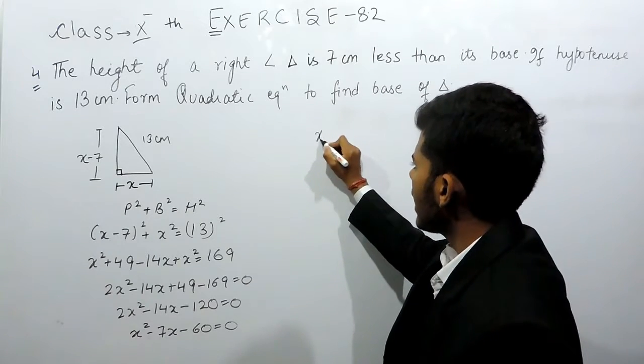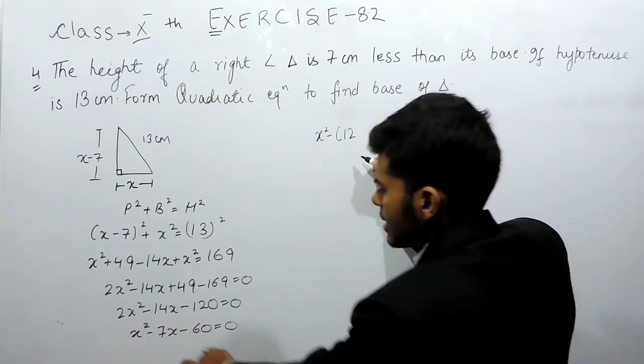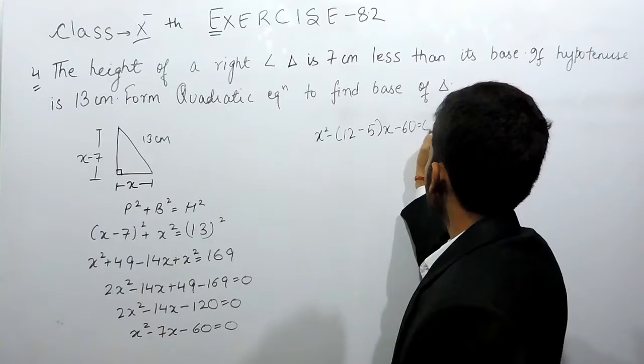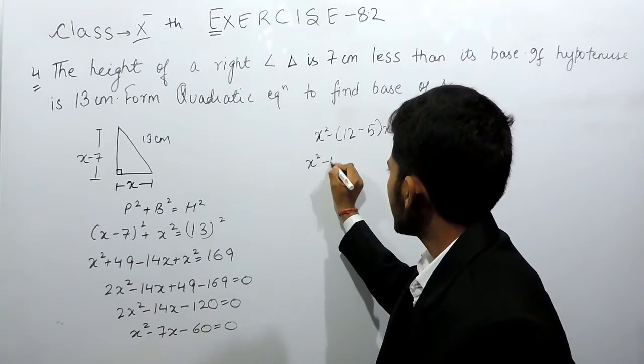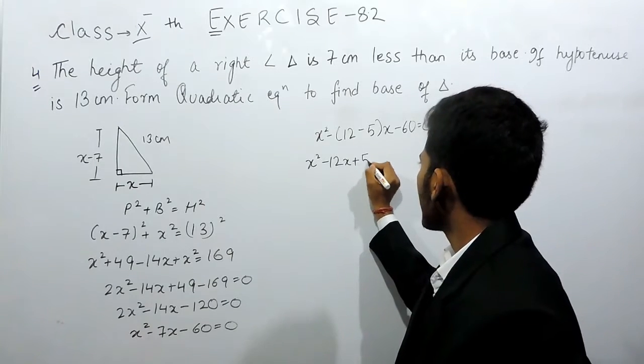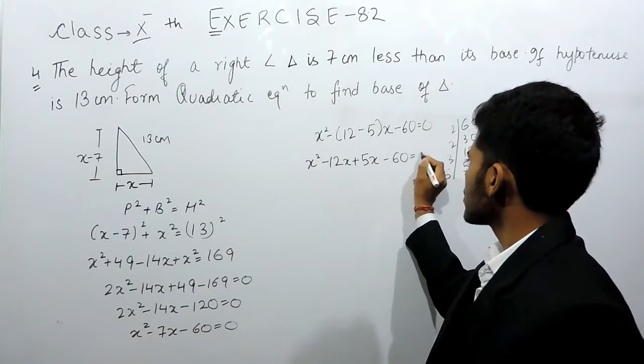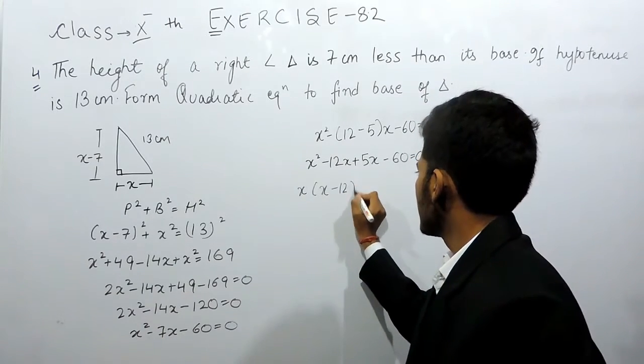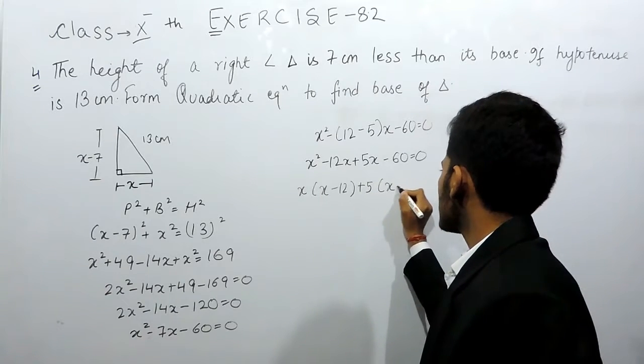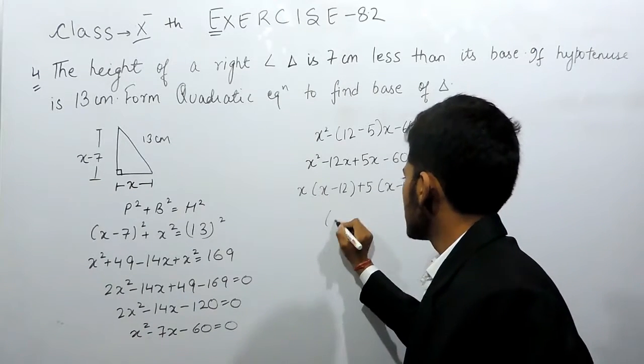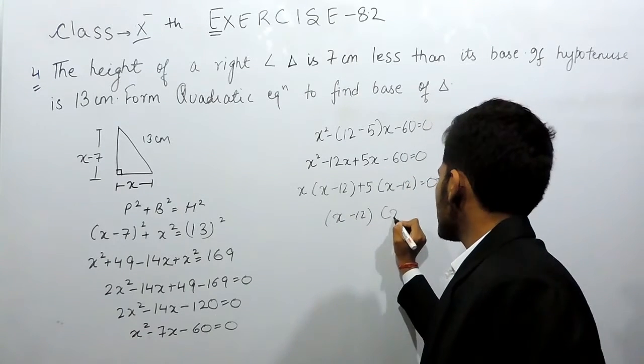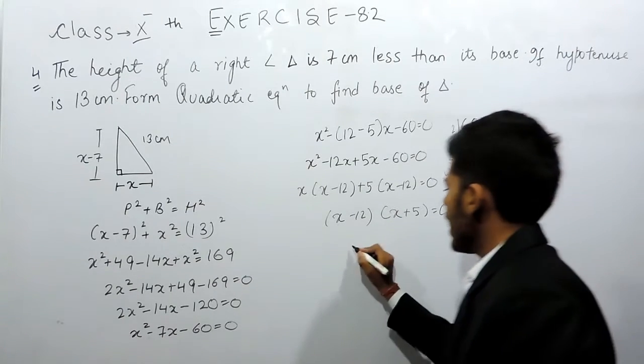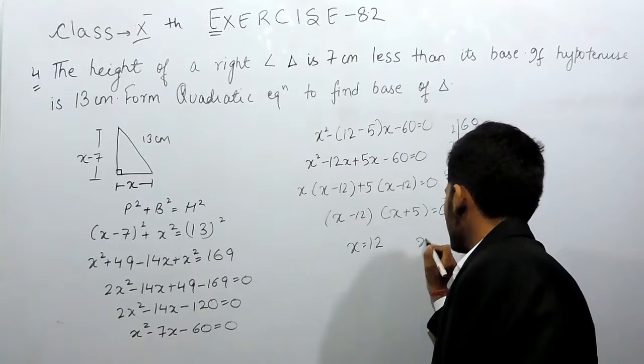So we can write this like x square minus 12 plus 5x minus 60 equals 0. So this is x square minus 12x plus 5x minus 60 equals 0. x minus 12 and x plus 5 equals 0. That brings us to x can be equals to 12 and x can be equals to minus 5.